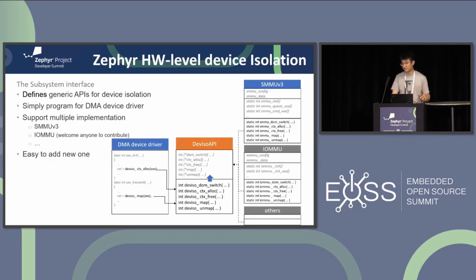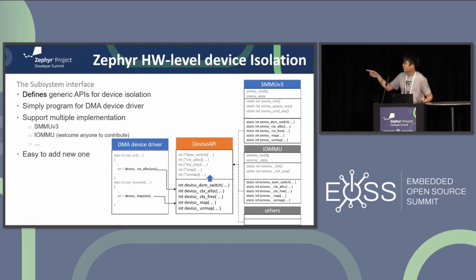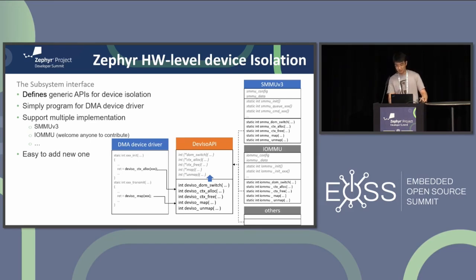Every DMA device needs a stream ID for the SMMU to perform translation. In the PCI case, the PCI BDF is the stream ID. The device isolation subsystem we introduced provides several generic APIs, allowing the DMA driver to directly use them. On the far right, the device isolation subsystem is designed to support multiple implementations such as SMMU or IOMMU — each instance only needs to implement the corresponding APIs to be easily integrated into the framework.